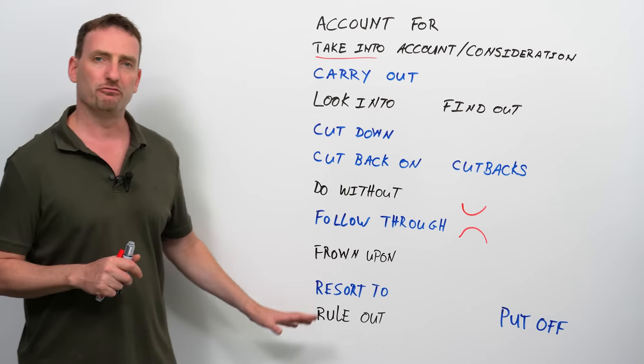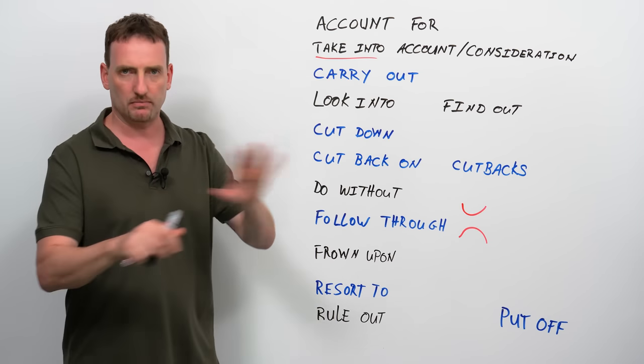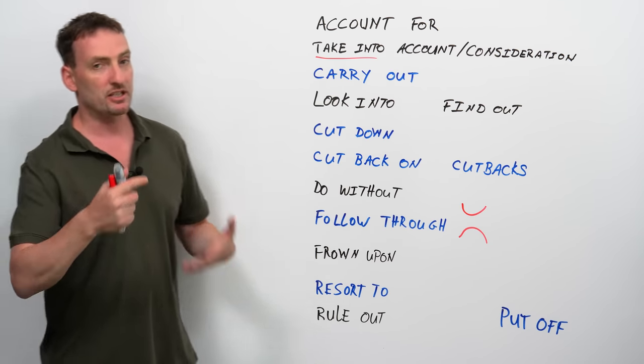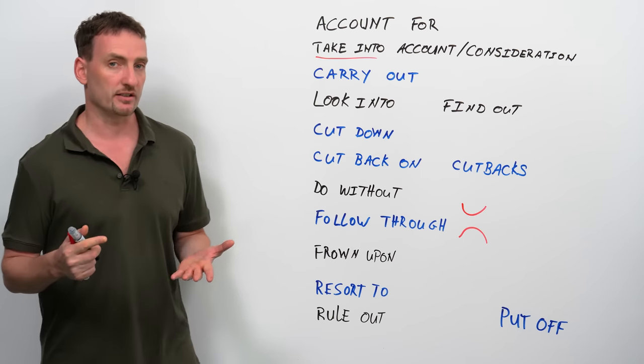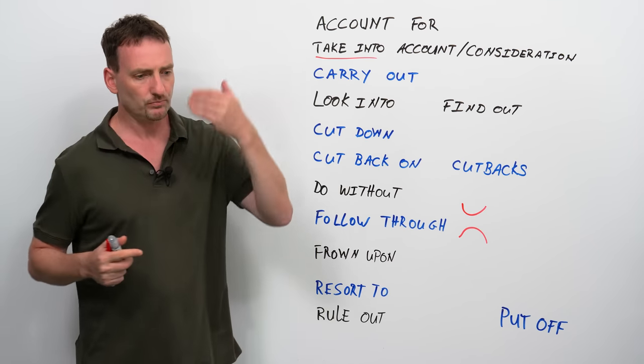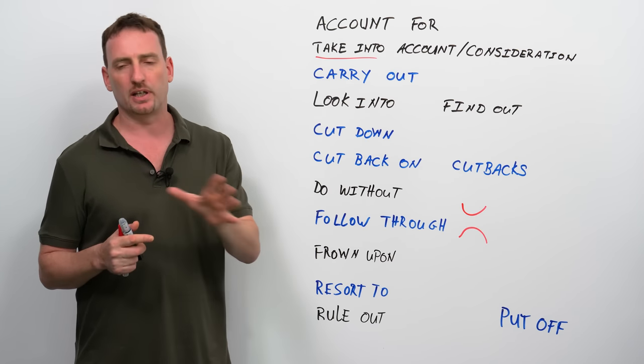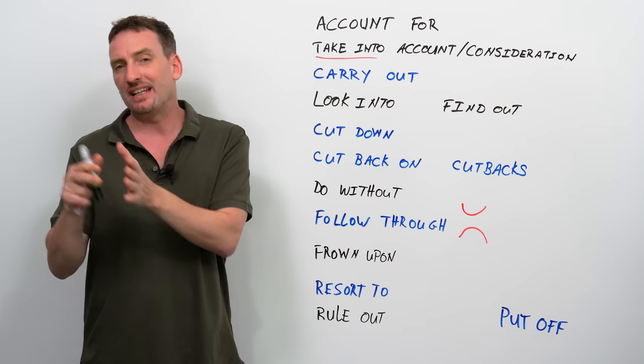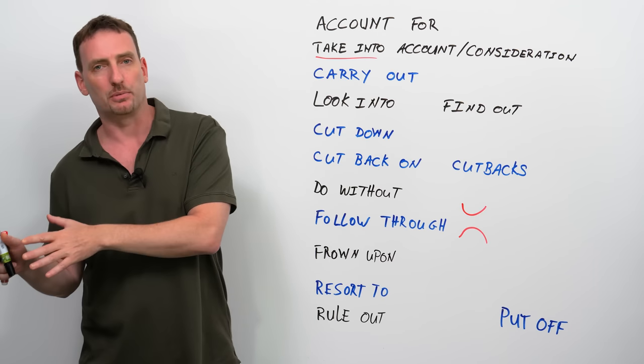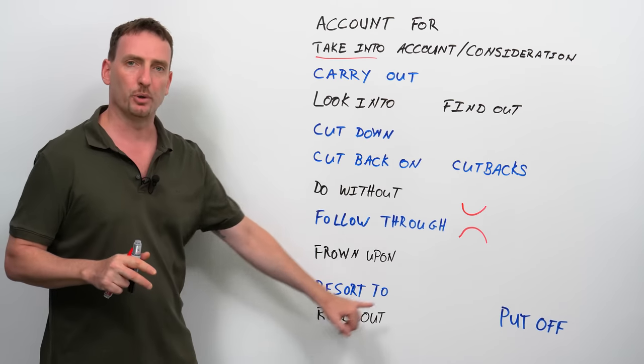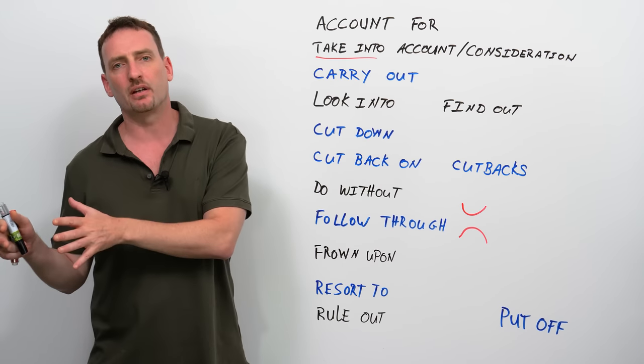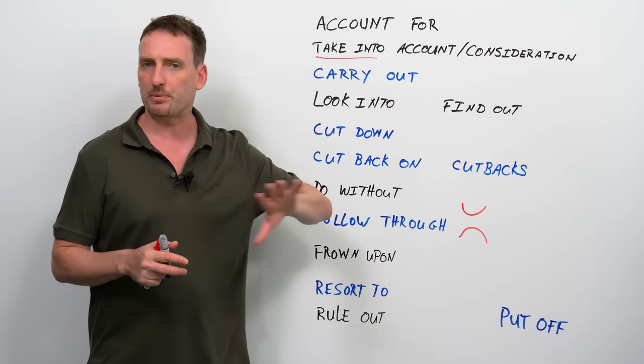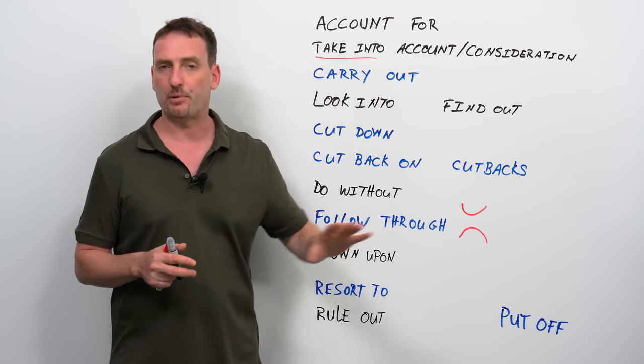Rule out. To rule out is to say impossible. This is not going to happen. So, especially when you're talking about negotiations, for example, in business. We're going to negotiate with you, but we're not ruling out legal action. So, again, I'm using legal action. I'm keeping this option available. So, not rule out means to leave something, an option available. To rule out means to make an option not available, impossible.